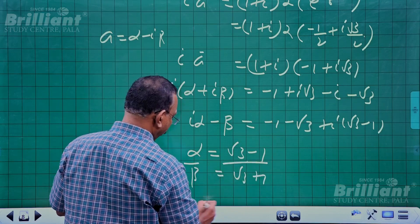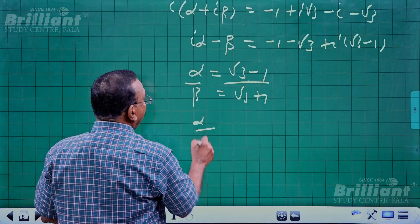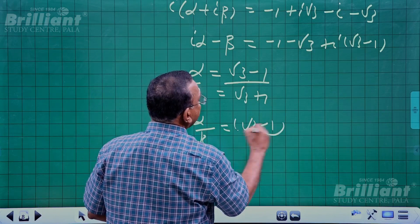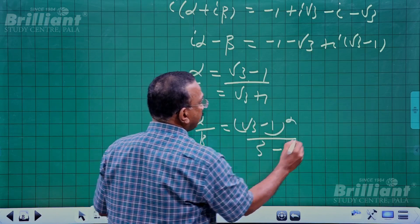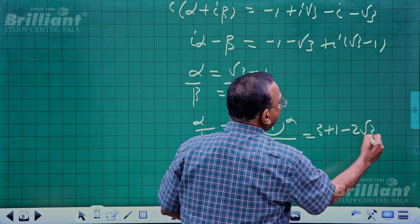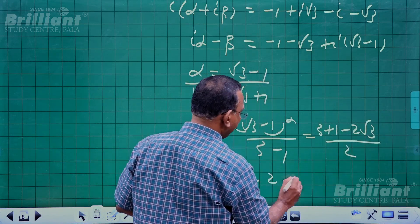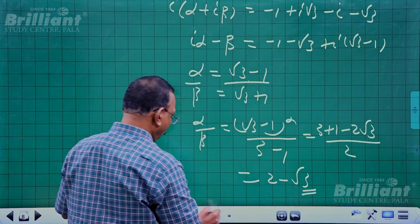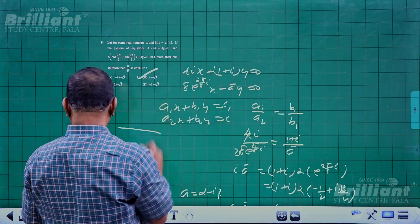So α/β = (√3-1)/(√3+1). Rationalizing: α/β = (√3-1)²/(3-1) = (3+1-2√3)/2 = 2 - √3. Option B is the answer.